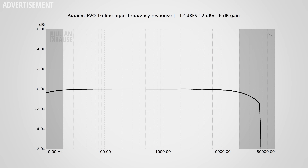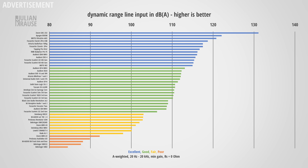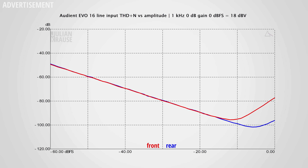Let me quickly cover the line-level input performance, which is very similar to the mic inputs. The frequency response is nearly a flat line in the audible range — no complaints. Dynamic range on the Evo 16 and SP8 are once again identical, at 112.2 dB — not record-breaking but solid for the majority of recording situations. One thing I noticed is that in terms of distortion, the rear inputs are slightly better than the frontal ones. Not that you'd ever hear this difference, but technically the rear inputs perform slightly better. The line inputs also accept a proper professional line level signal up to +18 dBV, which is great.